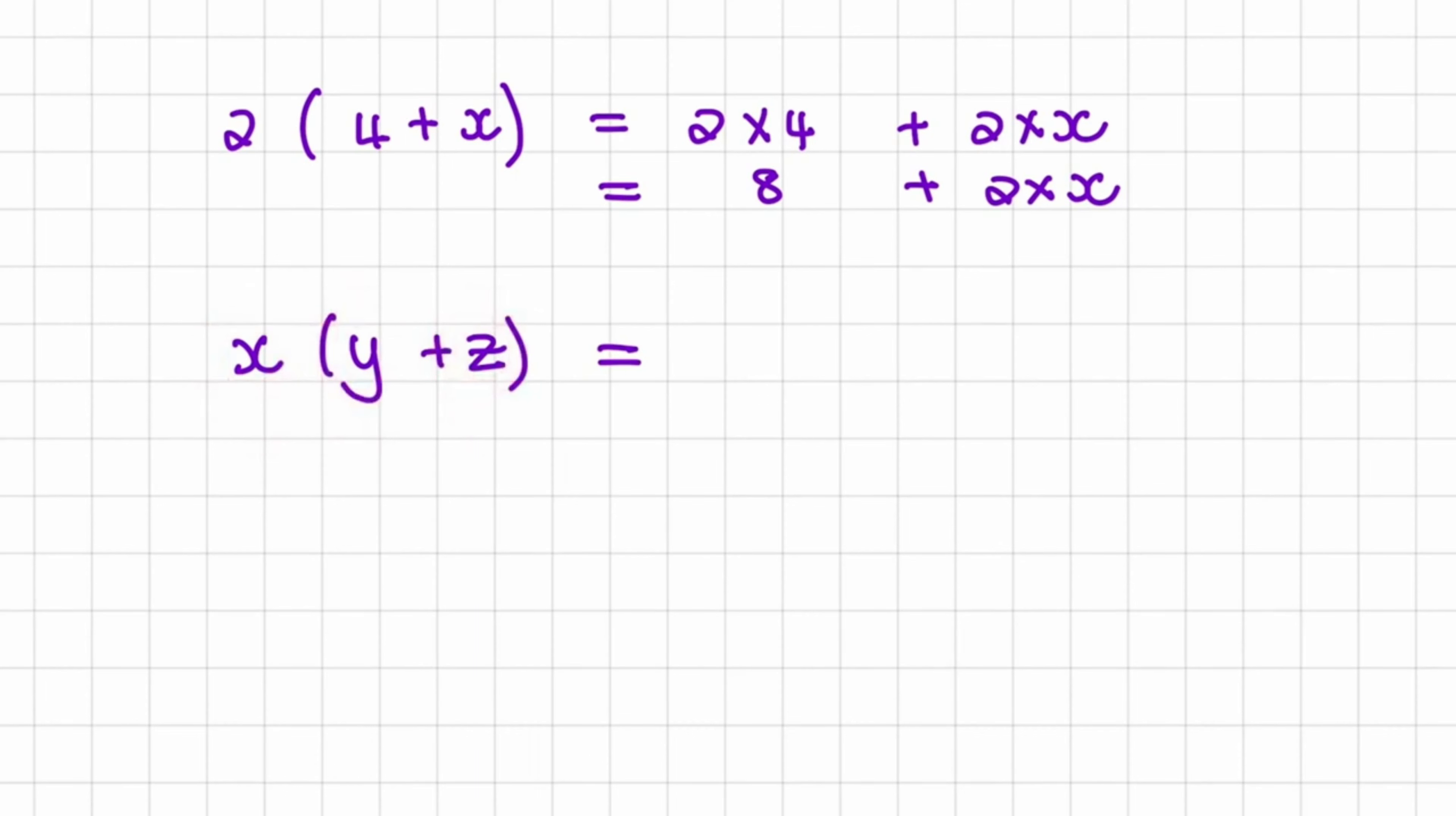So if we distribute this, we can say x multiplied with y, so the first number multiplied with the second unknown number, and we can add that to the first number, which is x, multiply that with z.